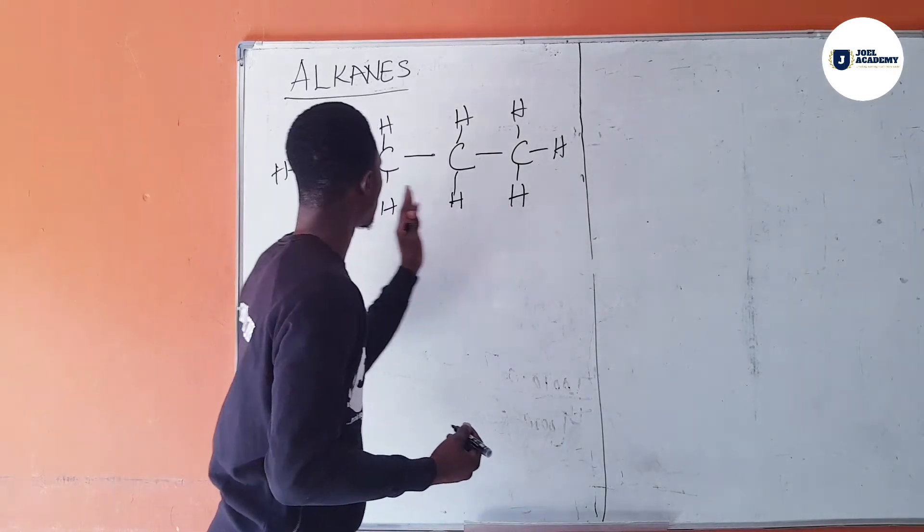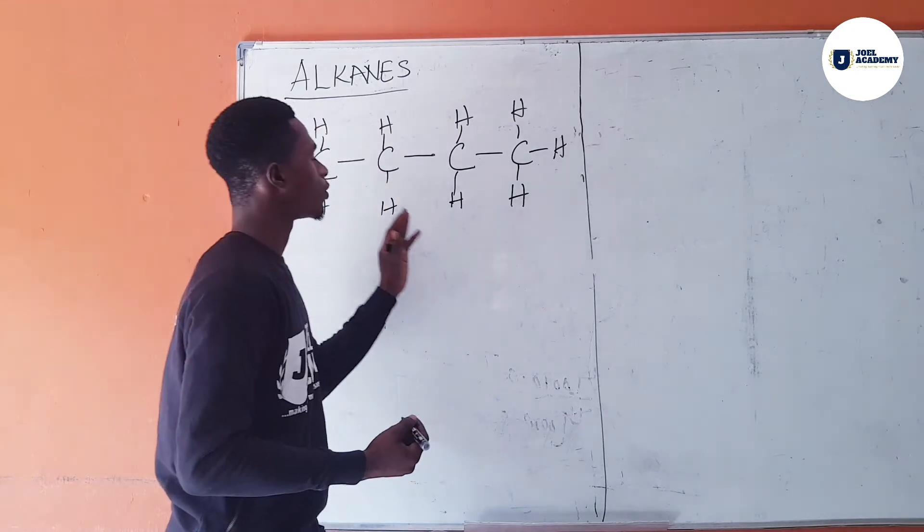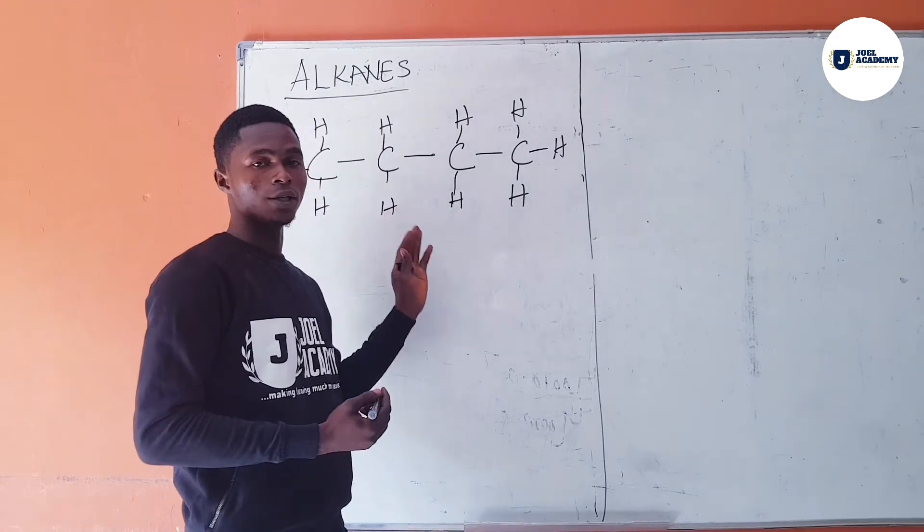In this kind of reaction or this kind of structure, we call this kind of structure that doesn't have a double bond and doesn't have a substitute, we call it alkanes.